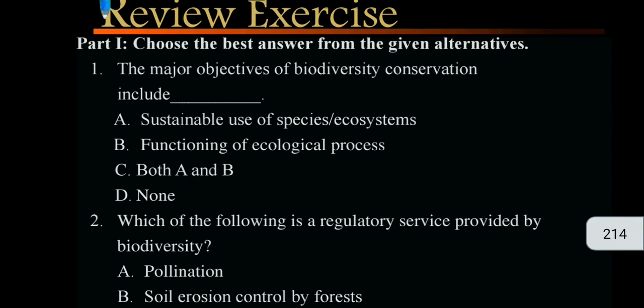The meta objective of biodiversity conservation includes the first part of the ecosystem, even in a sustainable use of species and ecosystem — it is sustainable.